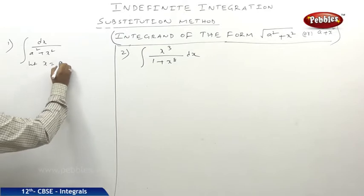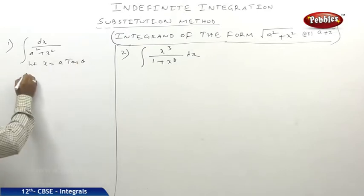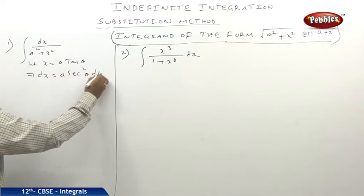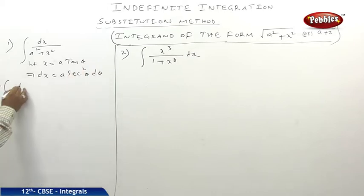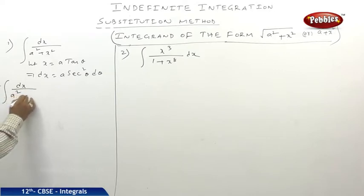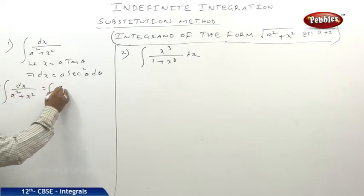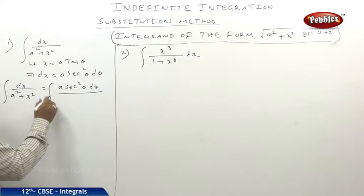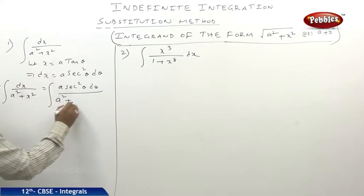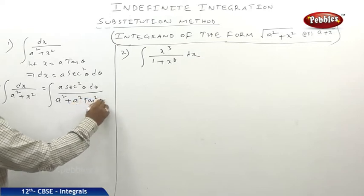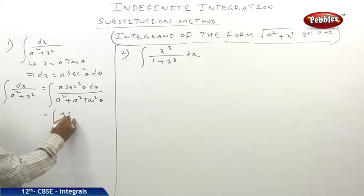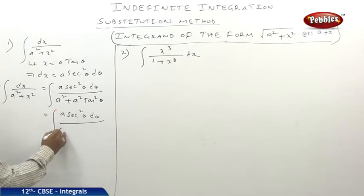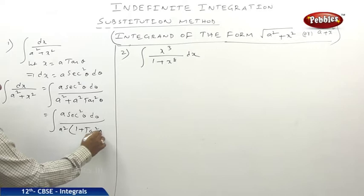Let x equal to a tan θ. Then dx equals a sec²θ dθ. Therefore, the integral of dx by (a² plus x²) equals, substituting dx as a sec²θ dθ and x² as a² tan²θ in the denominator: a sec²θ dθ divided by a² times (1 plus tan²θ).